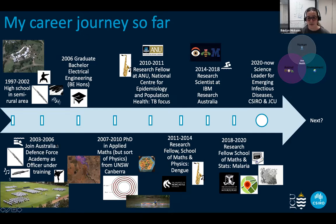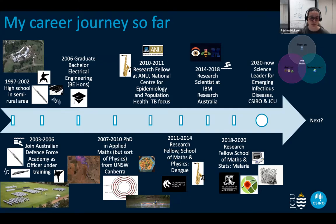To go to university, I really needed a scholarship because the closest university that did anything technical was a four-hour drive away, which is a bit far to commute every day. The best scholarship I could find was to join the Defence Force. So I joined the Royal Australian Air Force and went through ADFA, the Australian Defence Force Academy. Because I'm first-generation university — none of my parents or anybody in my extended family had been to university before — my career advisor said, oh, you're good at maths, go study engineering. So that's what I did: I went and did an electrical engineering degree.